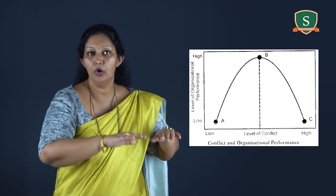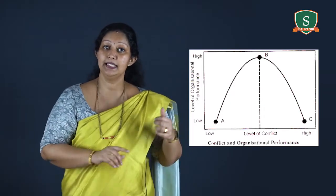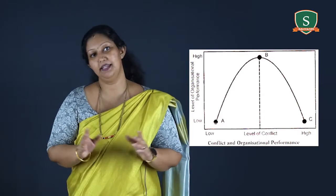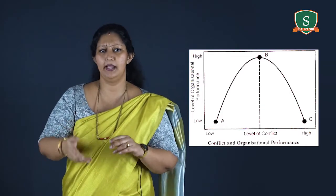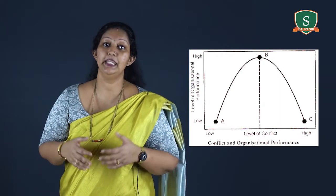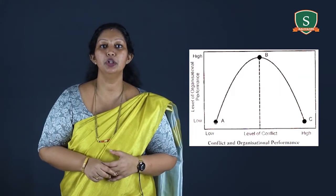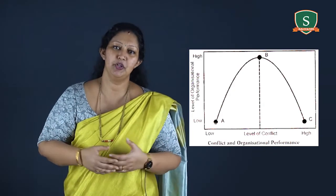This results in low organizational productivity. At the optimum level of conflict, that is at point B, people disagree with each other, resulting in new ideas. People think differently in a constructive way. New solutions are developed to deal with problems and achieve goals through optimum utilization of resources. In the next class, we are going to learn about levels of conflict and sources of conflict. Thank you. Happy learning.